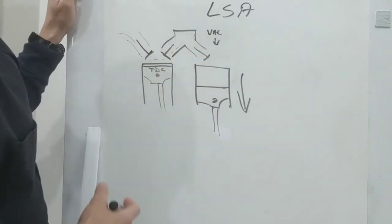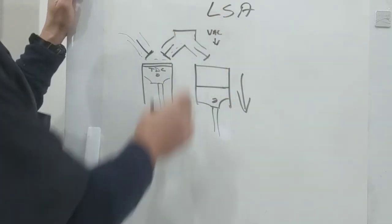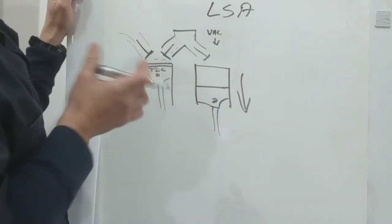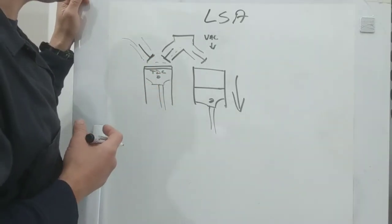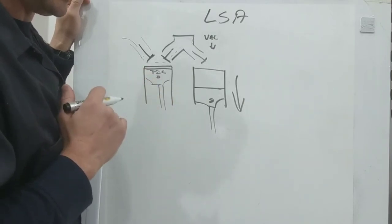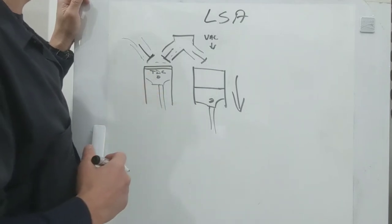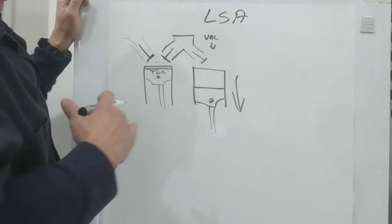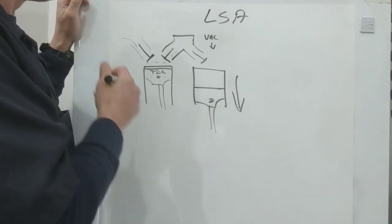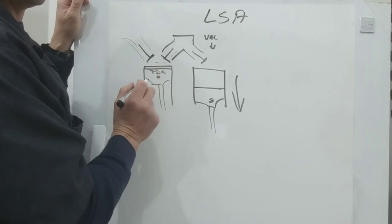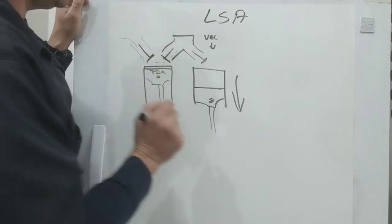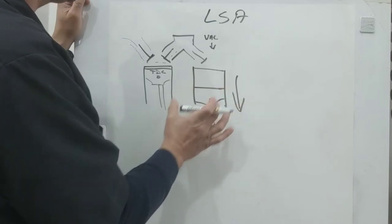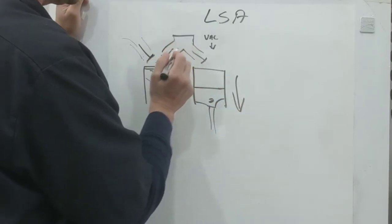And what that does is this intake manifold here sees that - it sees that this is a stronger pull down. So the vacuum, you're getting a strong signal here. Your piston's moving fast down, your intake's open, and you only have a little bit of bleed here. Now let's look at a tighter LSA. Now your triangle in between the exhaust and intake is now wider.